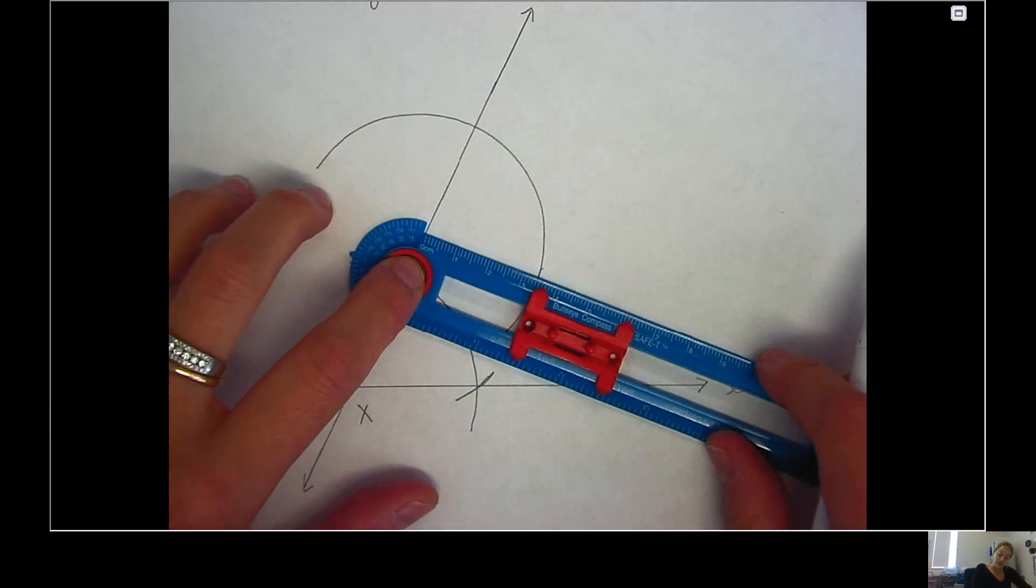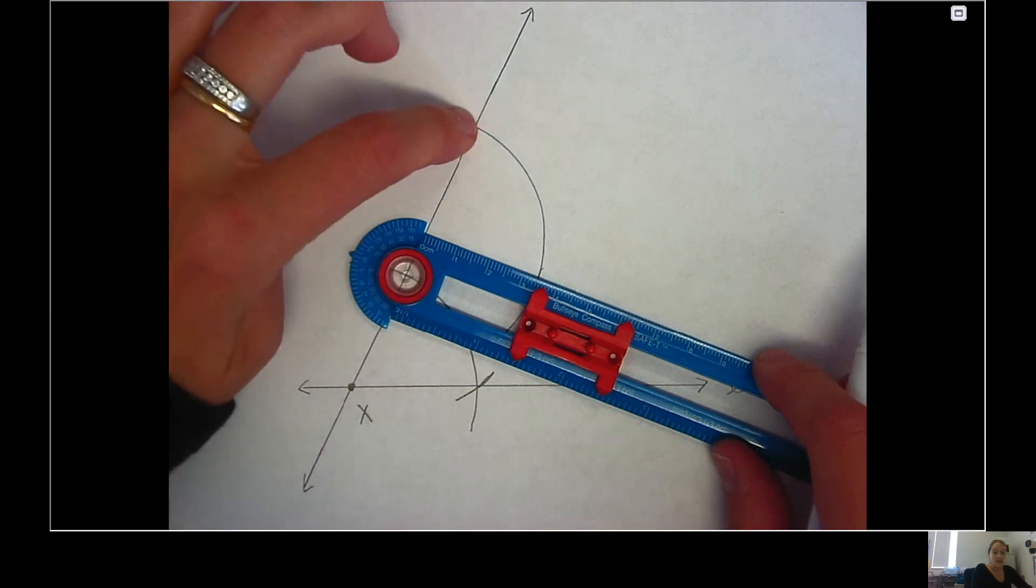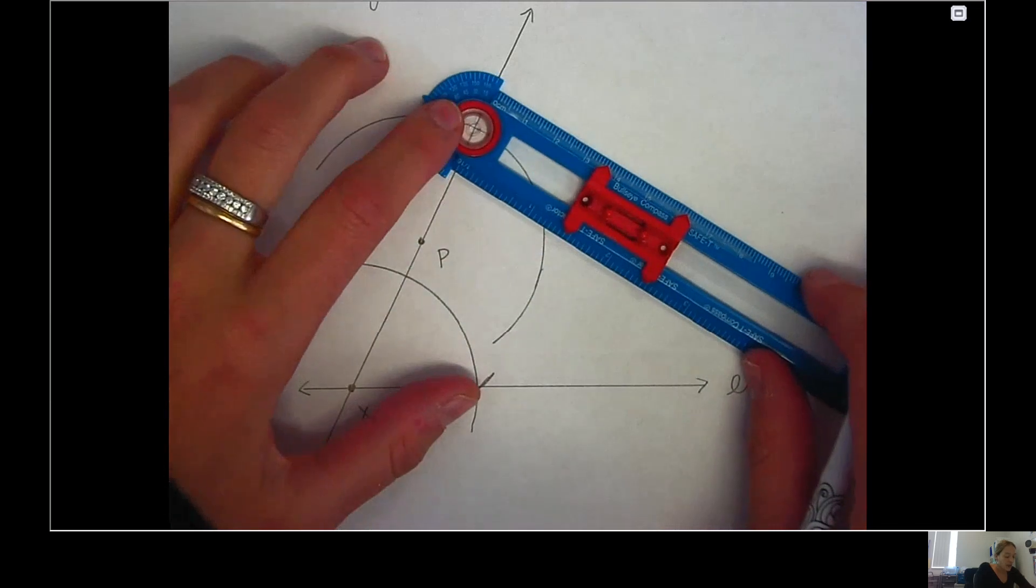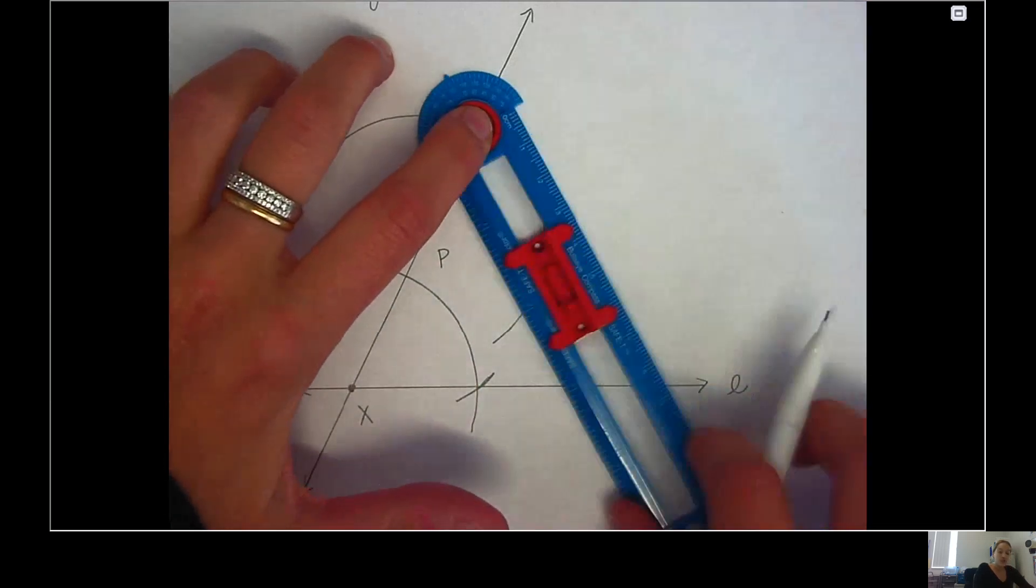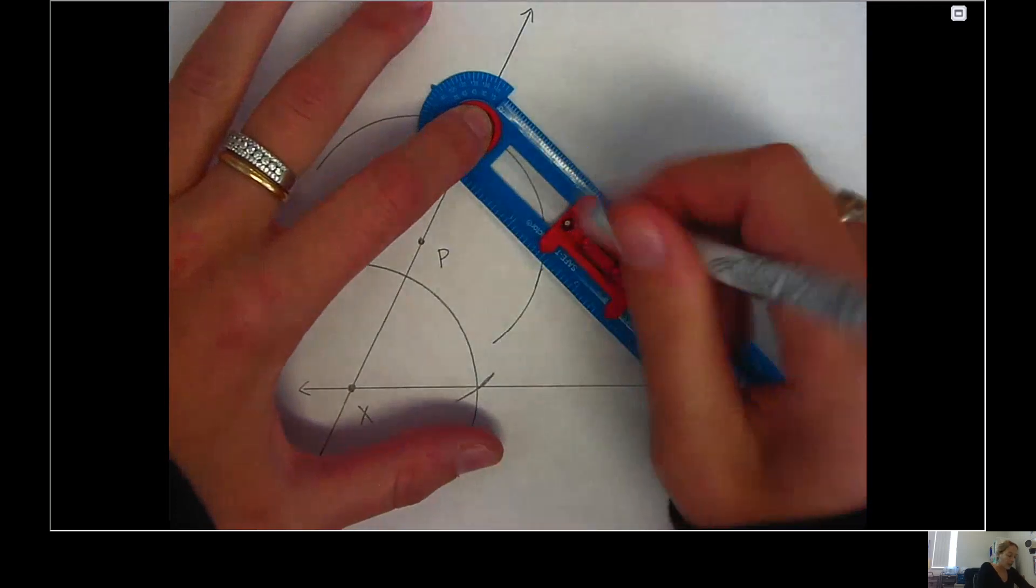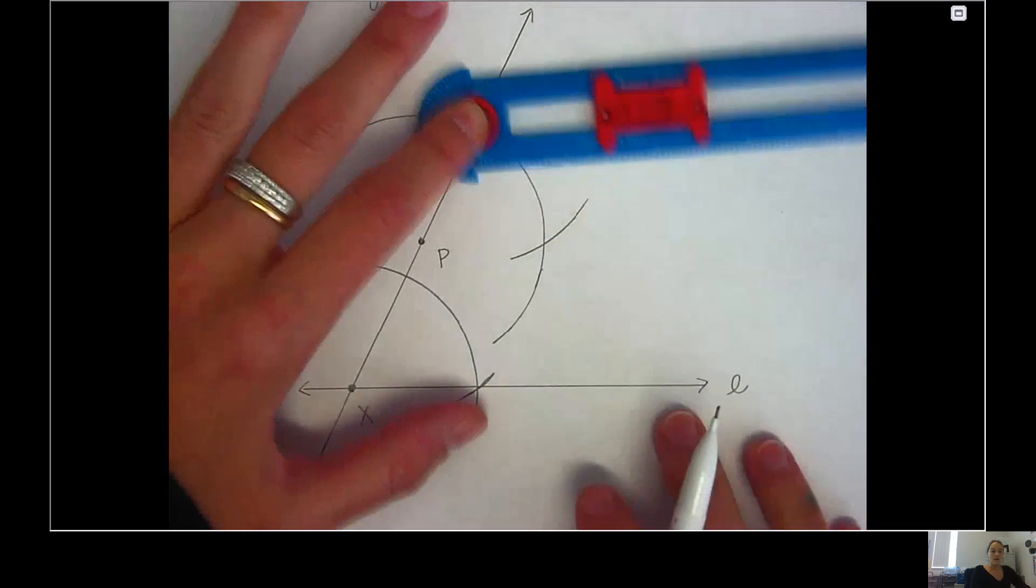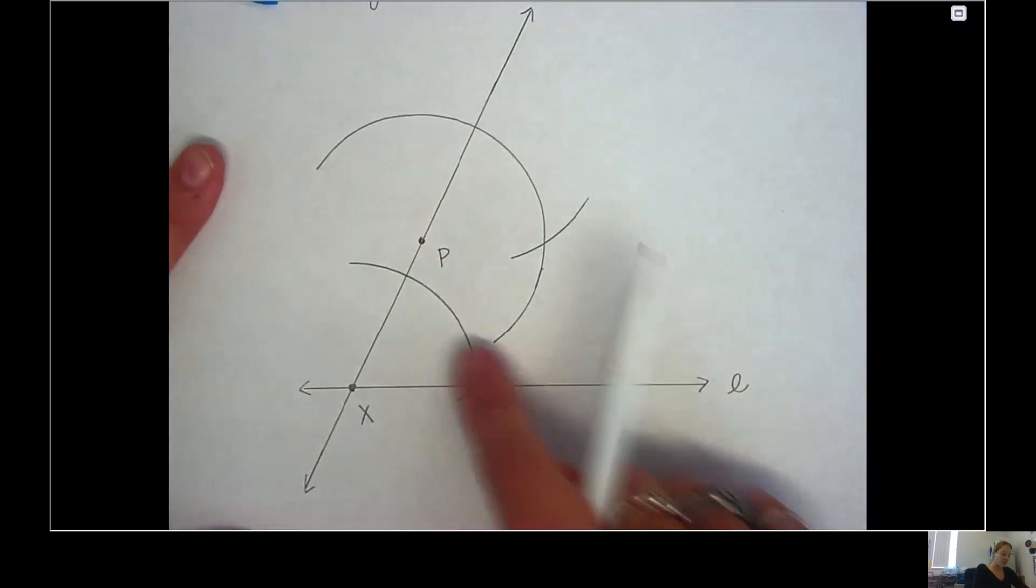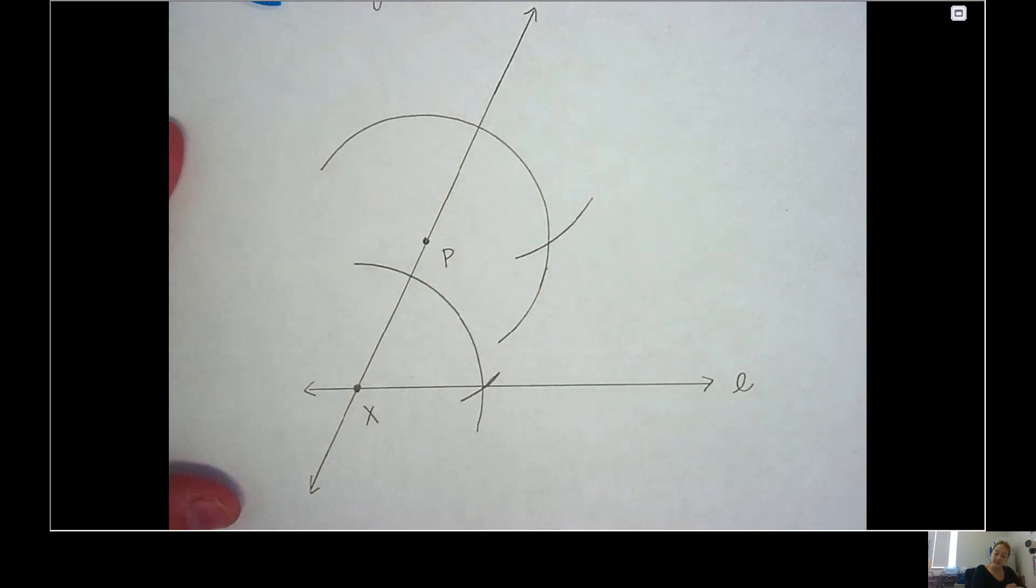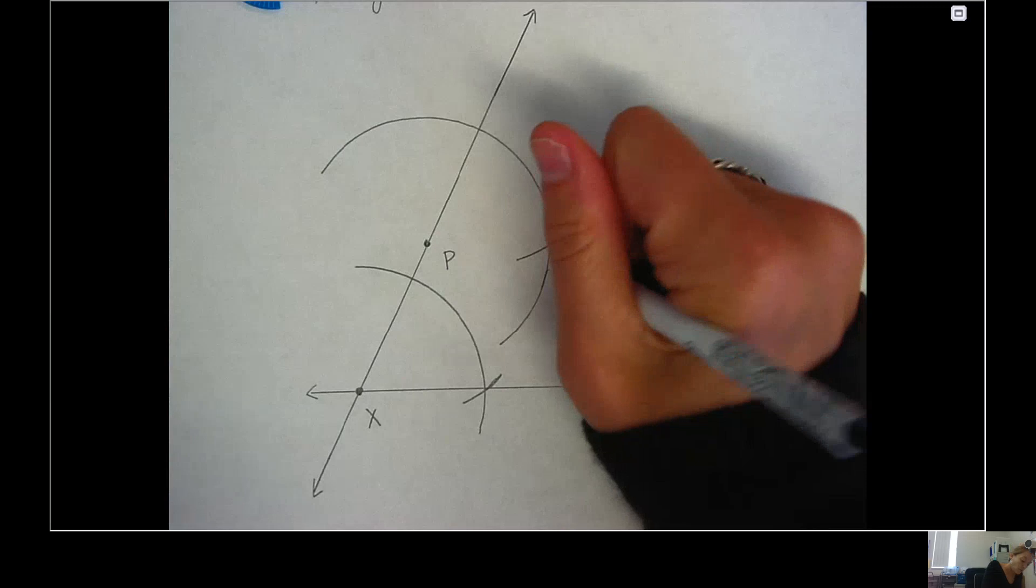So now leaving my radius the same, I'm now going to place my compass at the other intersection point above P and do the same thing. And this new arc should intersect this kind of nice half semicircle that I've created, which is why we wanted to make it like a semicircle there. So you can kind of see it's almost like little X's, right? So where these two arcs intersected, I'm now going to name this point Y.